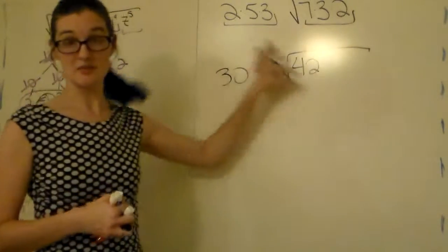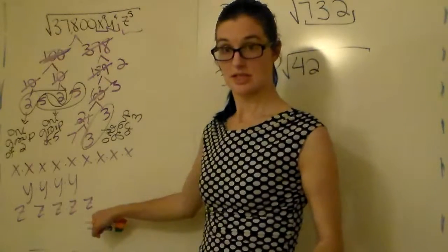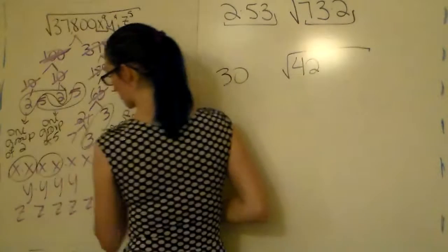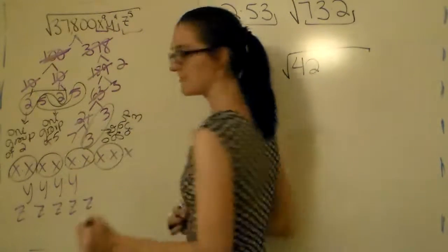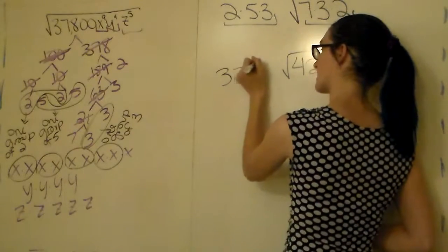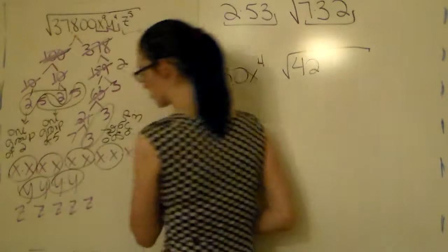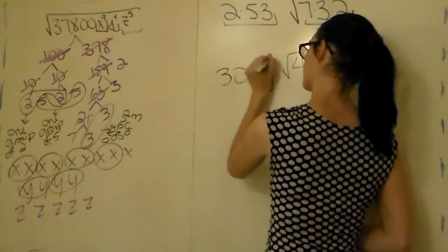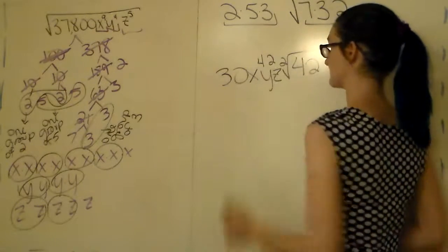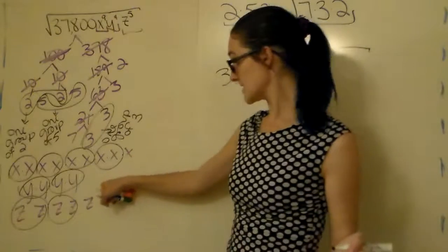I still left some spaces because I need to put my variables in. These variables are still people — they still want to go on dates. We've got nine x's, which form four groups that go on dates, giving us x to the fourth on the outside of the house, with one x left inside. For the y's, we have two pairs — y squared goes outside, and no y's remain inside. For the z's, we also have two pairs — z squared goes outside, with one z left inside.